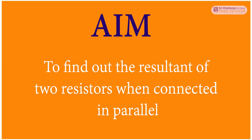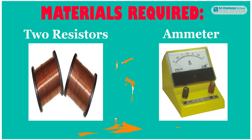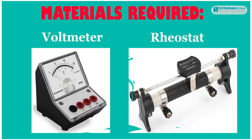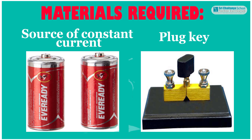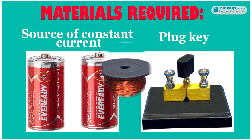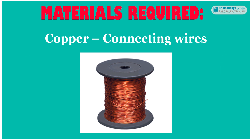The aim of this experiment is to find out the resultant of two resistors when connected in parallel. The materials that are required: two resistors, an ammeter, a voltmeter, a rheostat, a source of constant current, and plug and copper connecting wires.